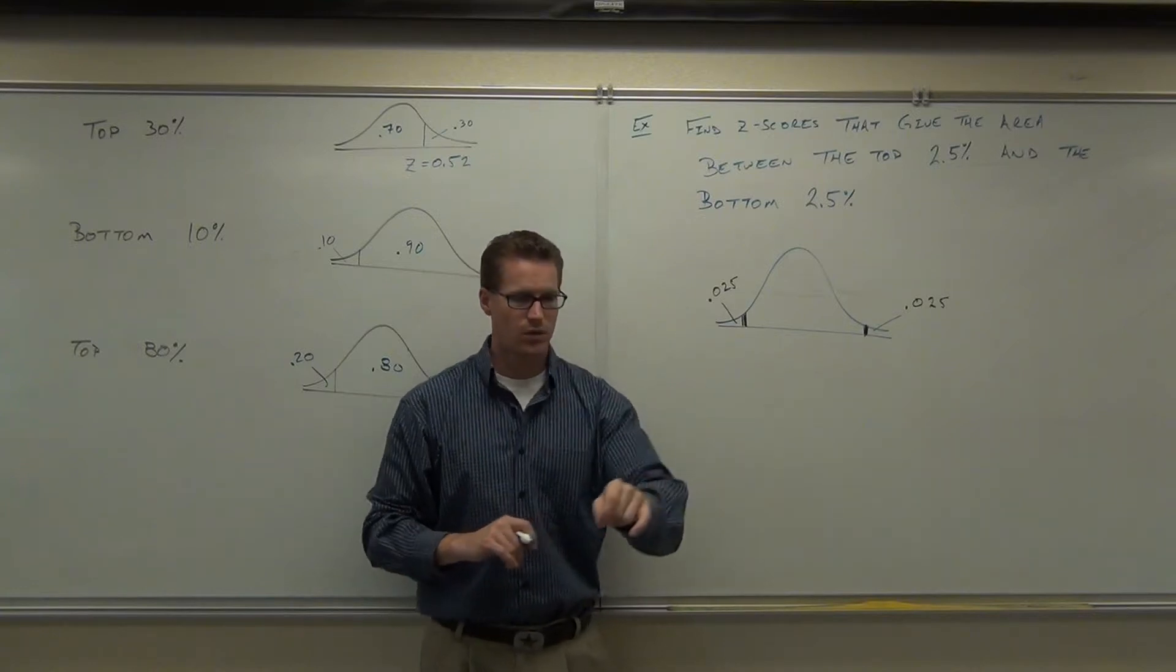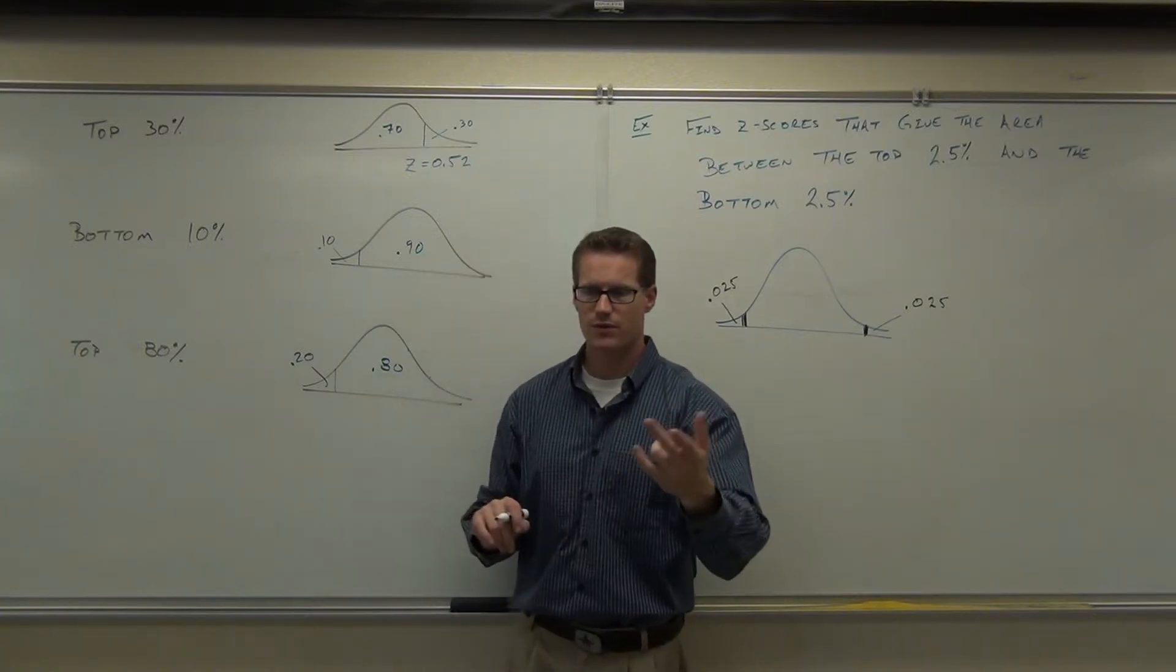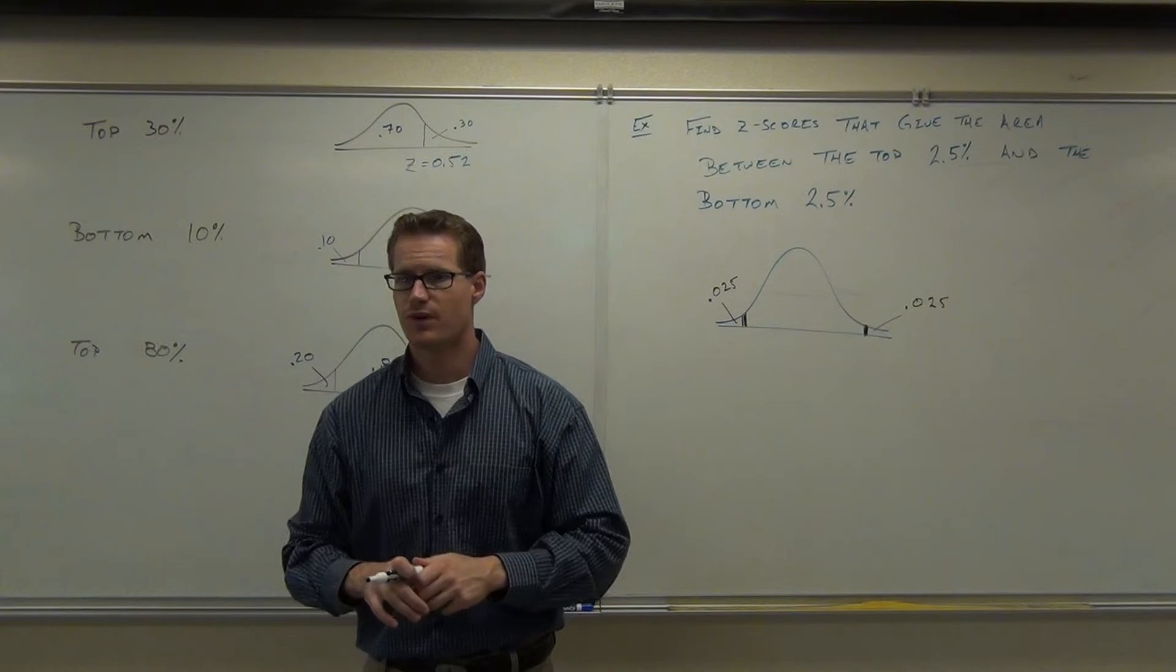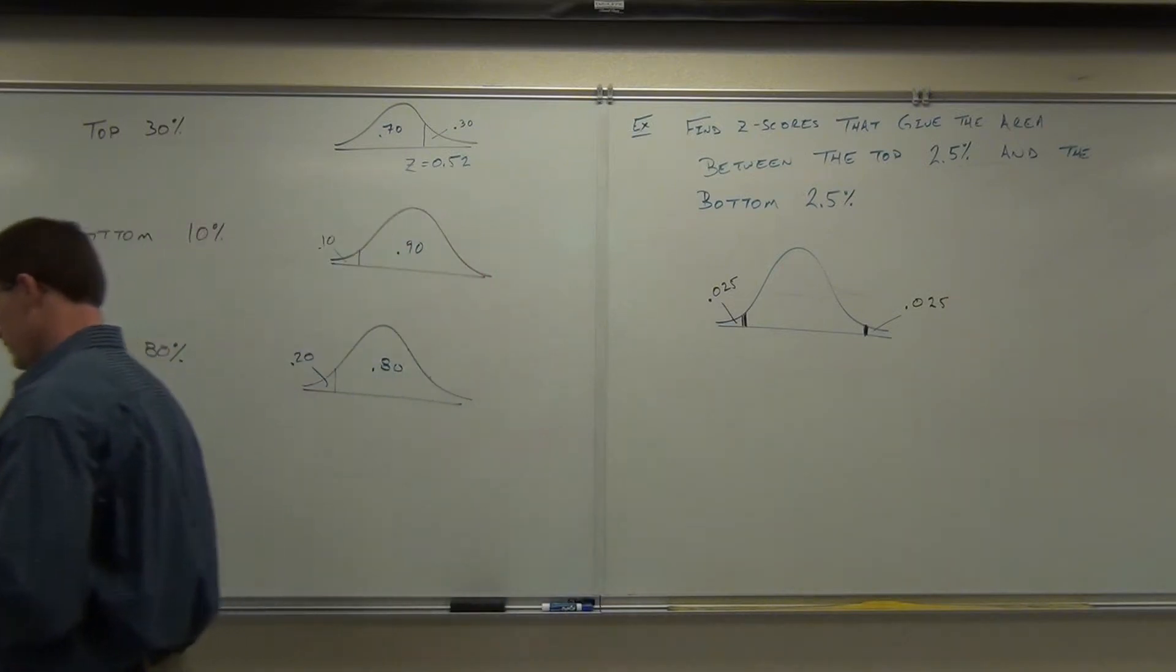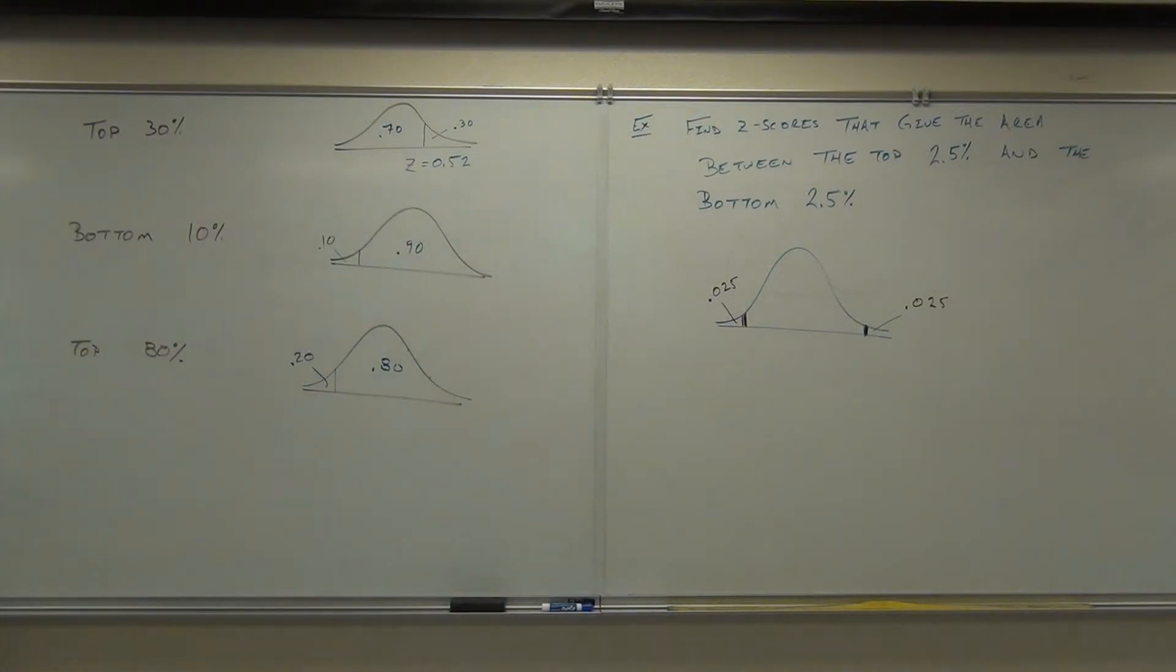Right now, on your own, with your calculator or your table, try both if you'd like. Look up the 0.025. Is it going to be a negative or positive z-score? Definitely negative. I mean, it's not even listed on the positive, right?